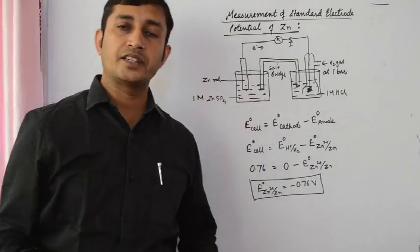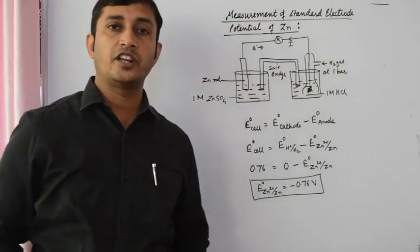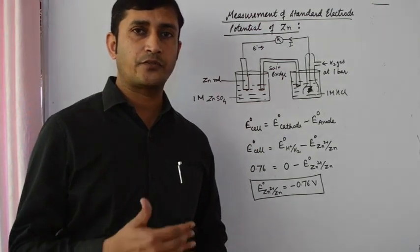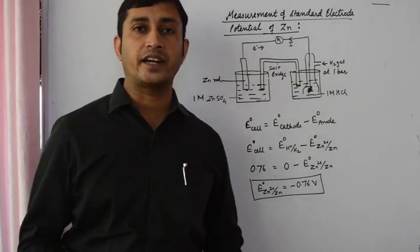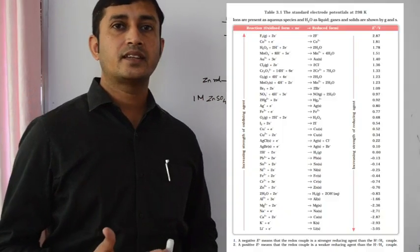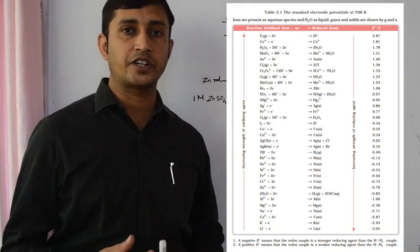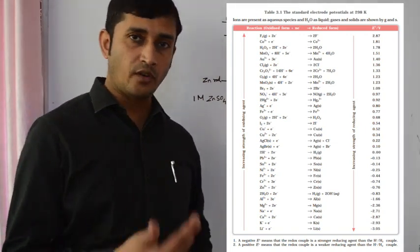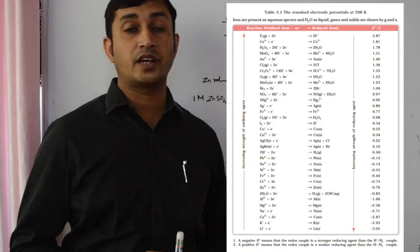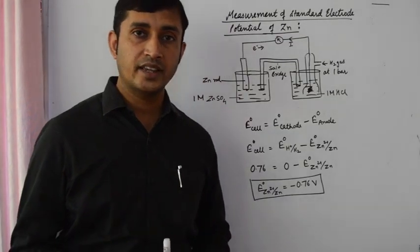In this way we can determine the standard electrode potential of any electrode by connecting it with the standard hydrogen electrode. When different electrodes are arranged in order of their standard electrode potential, we get a series known as the electrochemical series. In this series, electrodes having higher standard reduction potentials are kept at the top, and those with lower values at the bottom. The greater the value of standard reduction potential, the more the tendency to get reduced — meaning they act as very strong oxidizing agents.